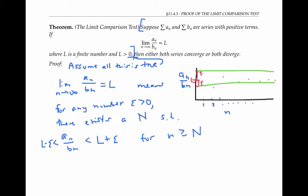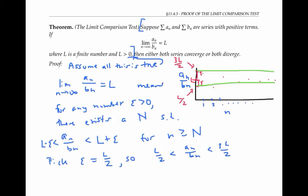For example, we could pick epsilon to be equal to L over two. That way, the interval would extend down to L minus L over two, which is equal to L over two, and extend up to L plus L over two, which is three L over two. So we have that L over two is less than a sub n over b sub n is less than three L over two, for little n bigger than or equal to our capital N that works for that value of epsilon.